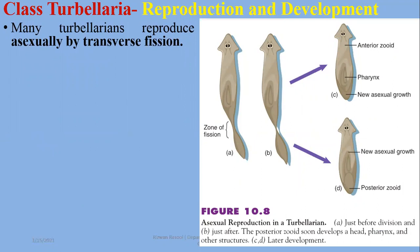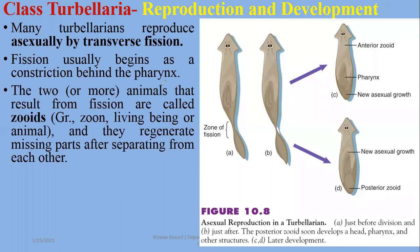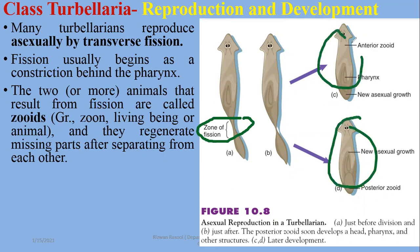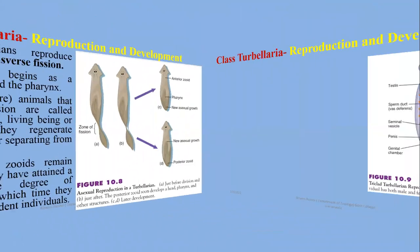Turbellarians reproduce asexually by binary fission, specifically transverse binary fission. Fission usually begins as a constriction behind the pharynx — the zone of fission — and the two or more animals that result from breakage or fission are called zoids. They regenerate missing parts after separating from each other. Sometimes zoids remain attached until they have attained a fairly complete degree of development, at which time they detach as independent individuals. Regeneration occurs due to unspecialized cells called neoblasts.